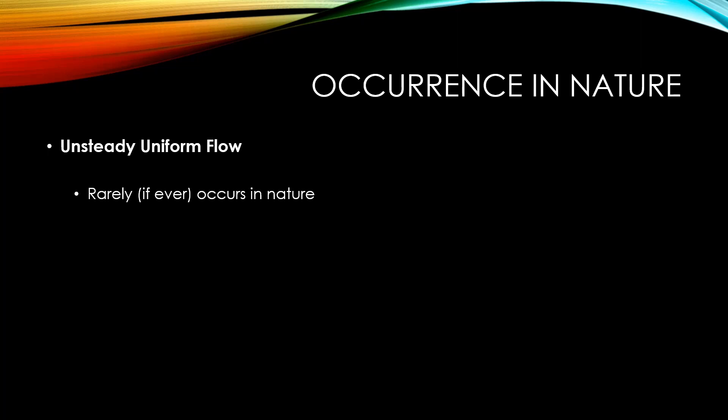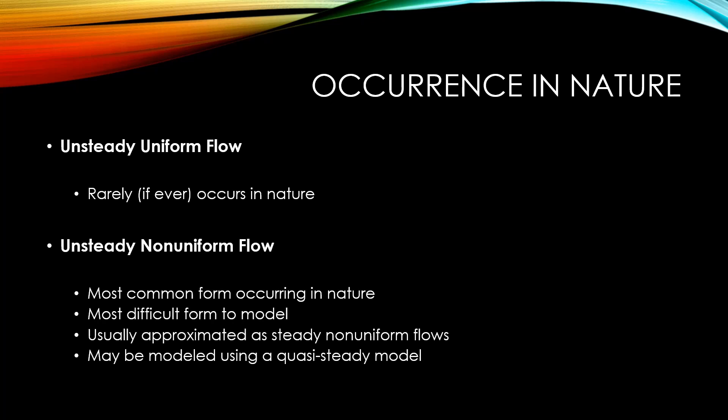Unsteady uniform flow is one form that rarely occurs in nature — it is so uncommon that we are not going to cover it in this class. Unsteady non-uniform flow is the most common form occurring in nature; however, it is also the most difficult form to model. Civil engineers can often approximate unsteady non-uniform flow as steady non-uniform flow, or model it using a quasi-steady model, which will be covered later in this class.